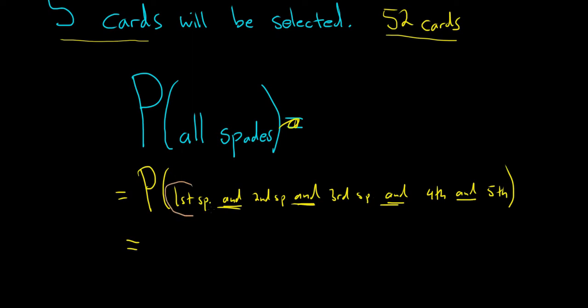First, we want the probability of picking a spade card. There are 13 ways to pick a spade card, and there are 52 ways to pick a card. So the probability of picking a spade card is the number of ways to pick a spade card divided by the number of ways to pick a card.